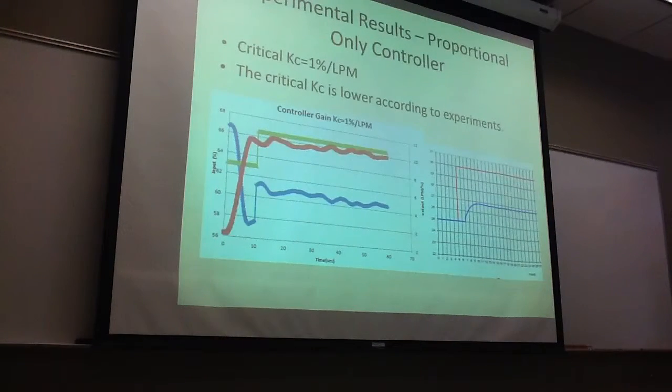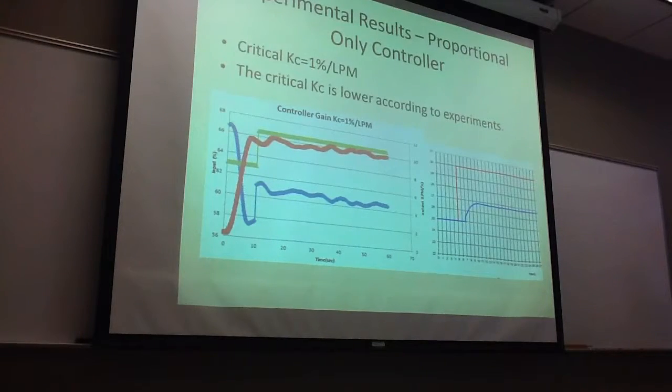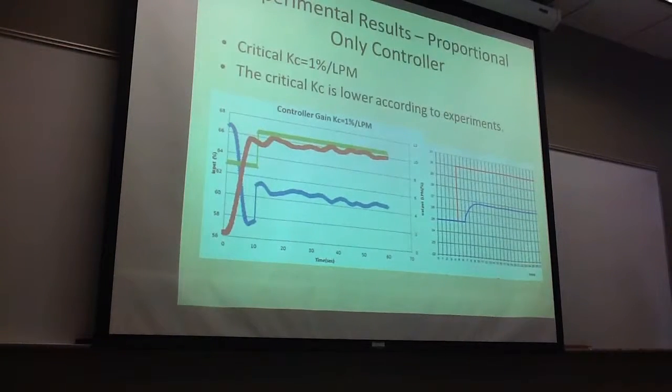So here it's to compare with the experimental results. We can see that the experimental one, which is on the left, has a Kc that is 1, and on the right it's equal to 2.5 for the critical region.